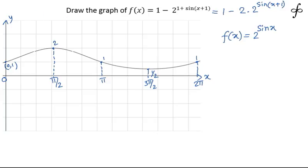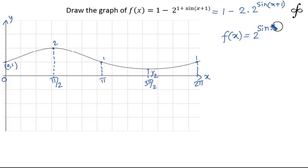Since the function 2^(sin x) is periodic with period 2π — because the period of sin x is 2π — I have only drawn the graph from 0 to 2π, as the same graph repeats after that. After getting all these points, we join them by a sinusoidal wave. The graph starts at (0, 1), reaches a maximum of 2, dips back to 1, then further dips to 1/2, and returns to 1, repeating with period 2π.